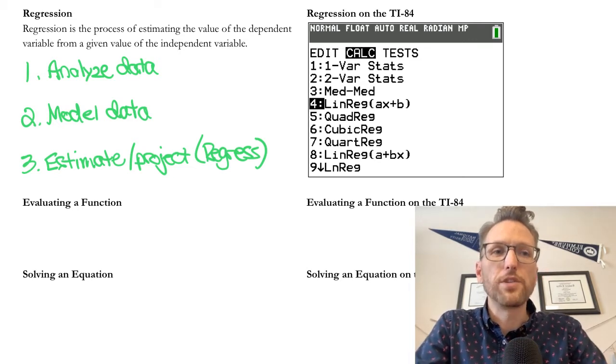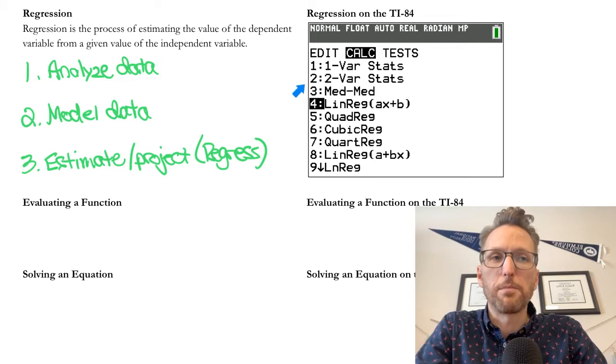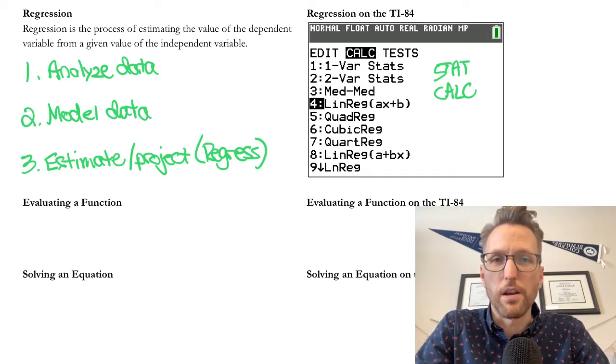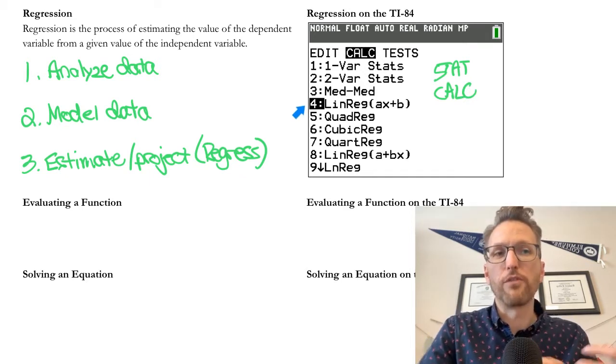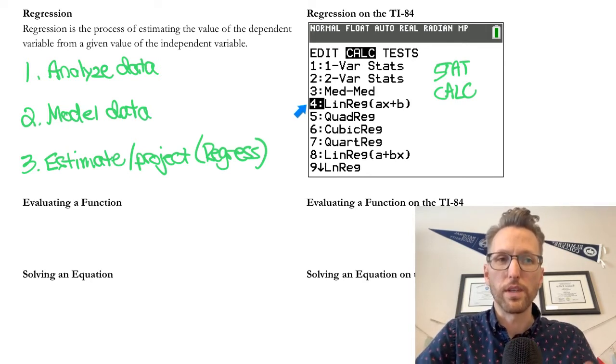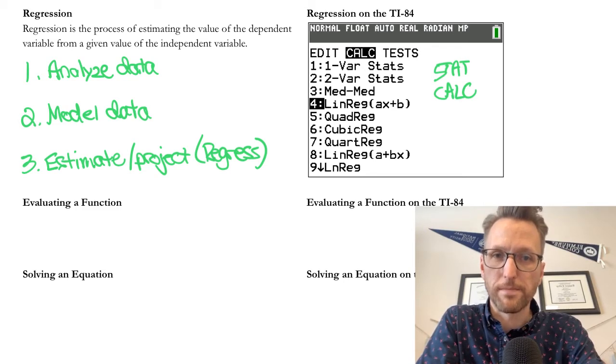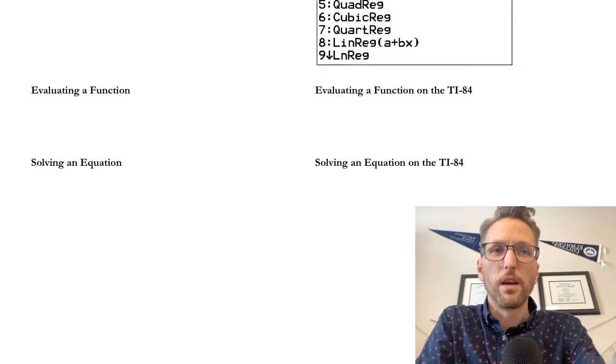Oh, and then as you see on the right, you could see all these different options. This is by pressing stat calc. So press the stat button and arrow right to calc. And you'll see that soon as well. These are some of the options that are included. So the variety of ways that we can model data. So the one that we're going to use is lin reg, which is linear regression.